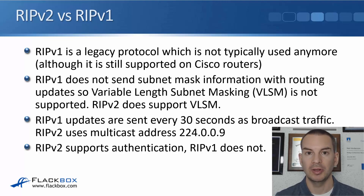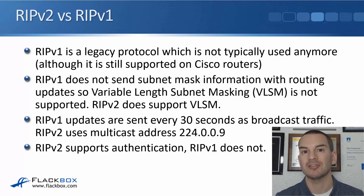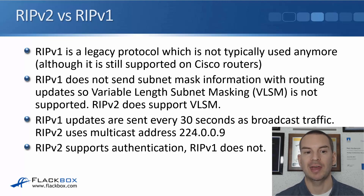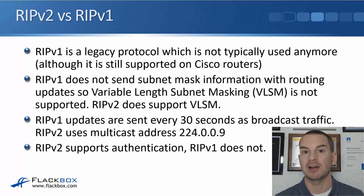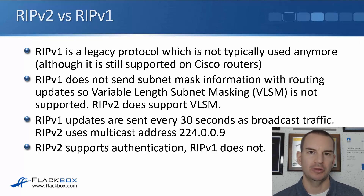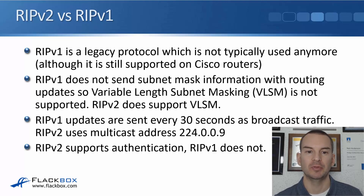RIP version 1 had limitations even worse than version 2. It doesn't send subnet mask information with routing updates, so variable length subnet masks, VLSM, is not supported. You don't have to use classful networks with RIP version 1 — for example, all your networks could be a slash 28 — but you couldn't mix slash 24, slash 28, and slash 30. They all have to be the same.